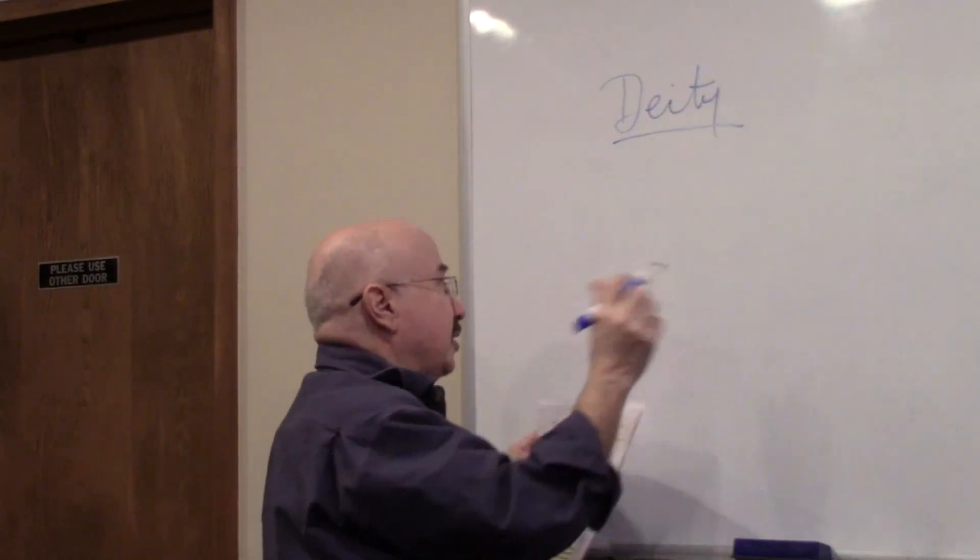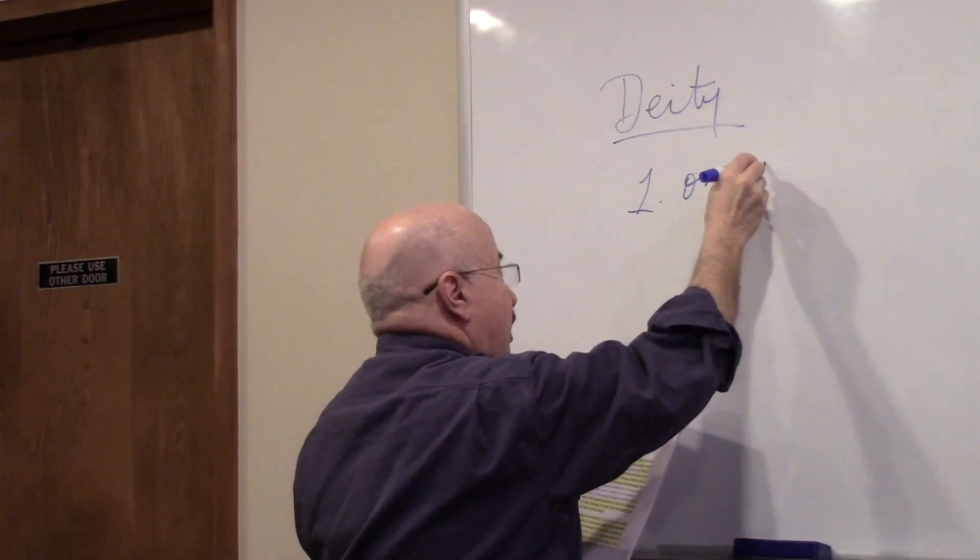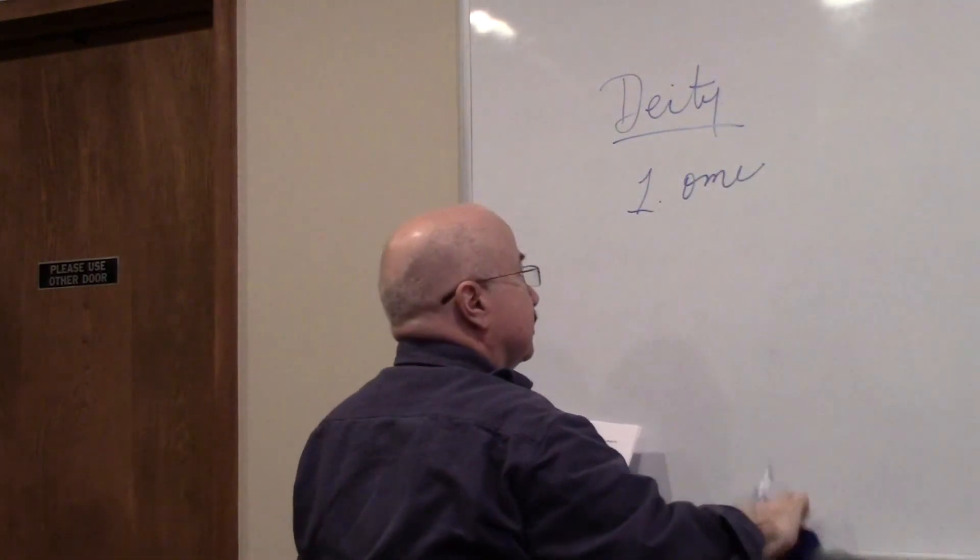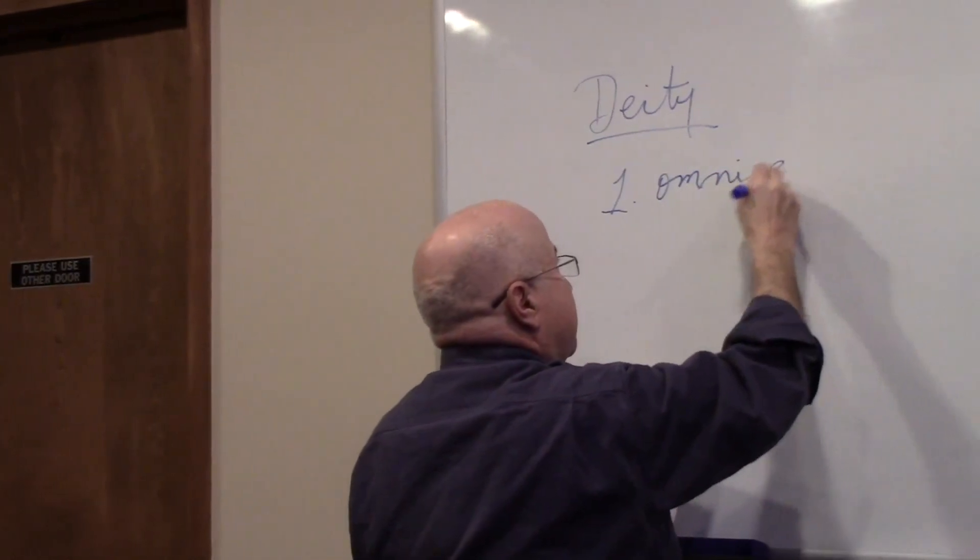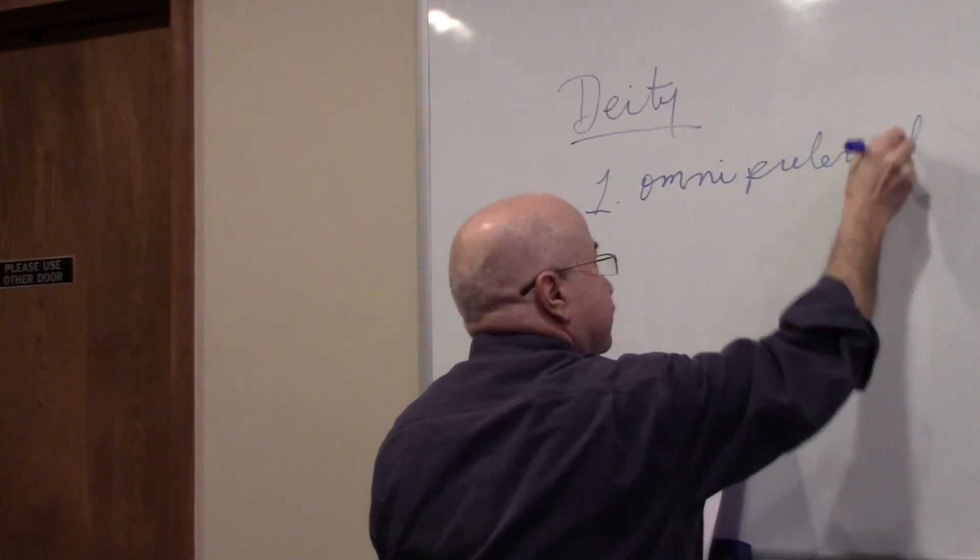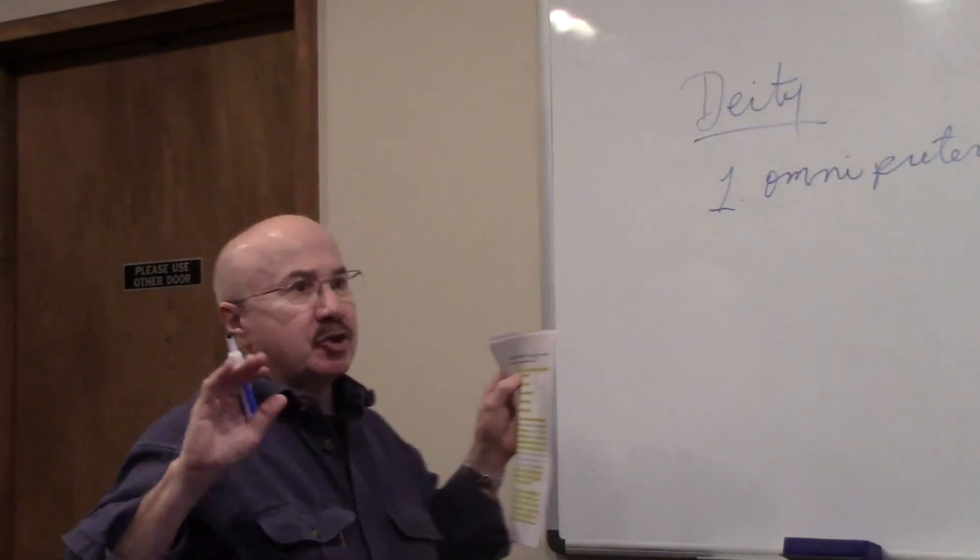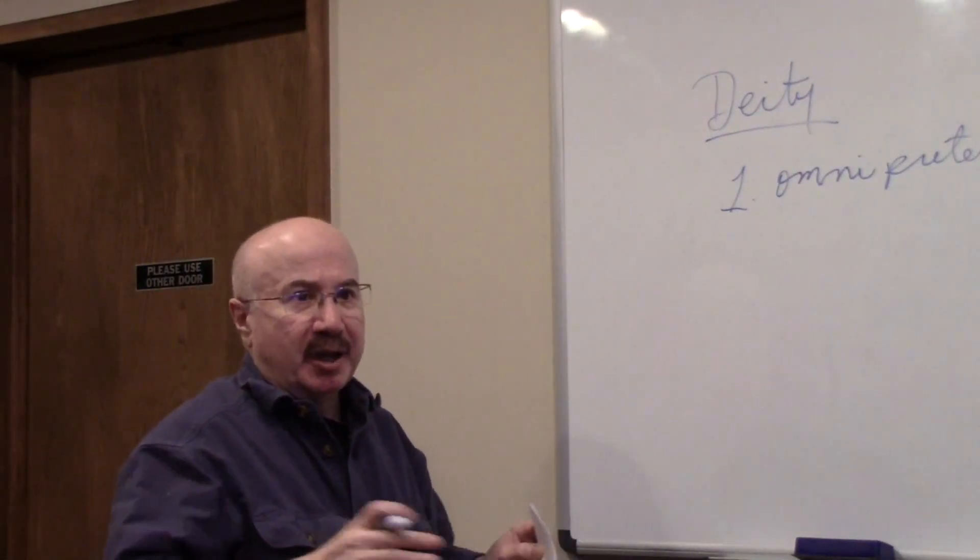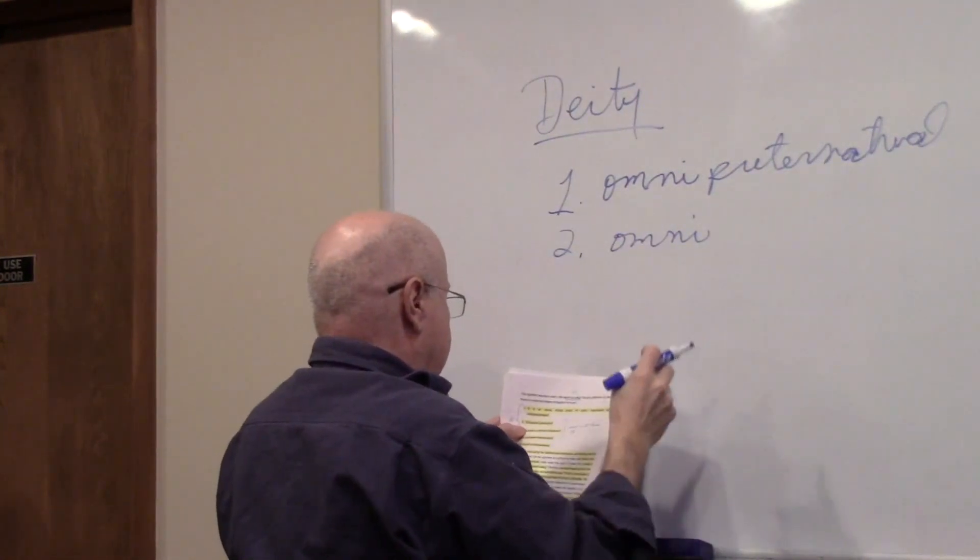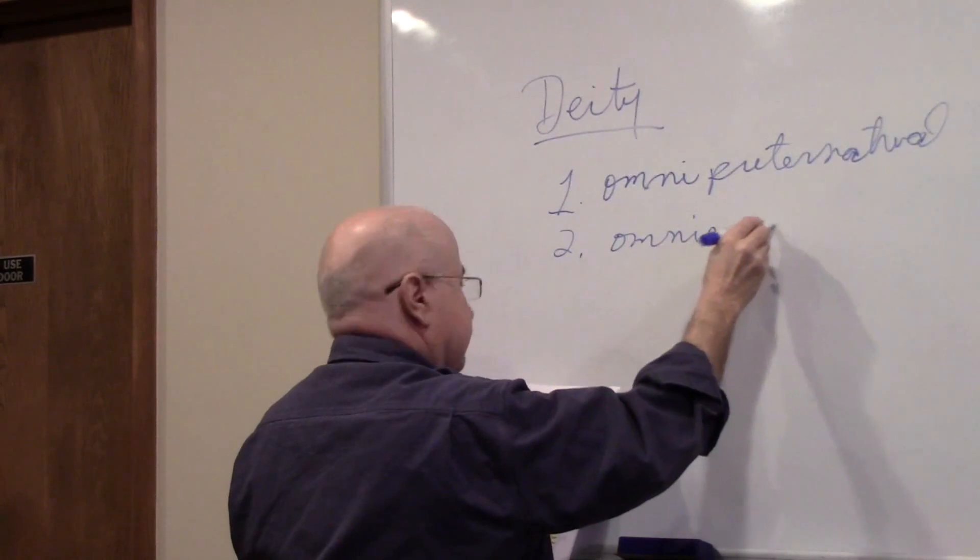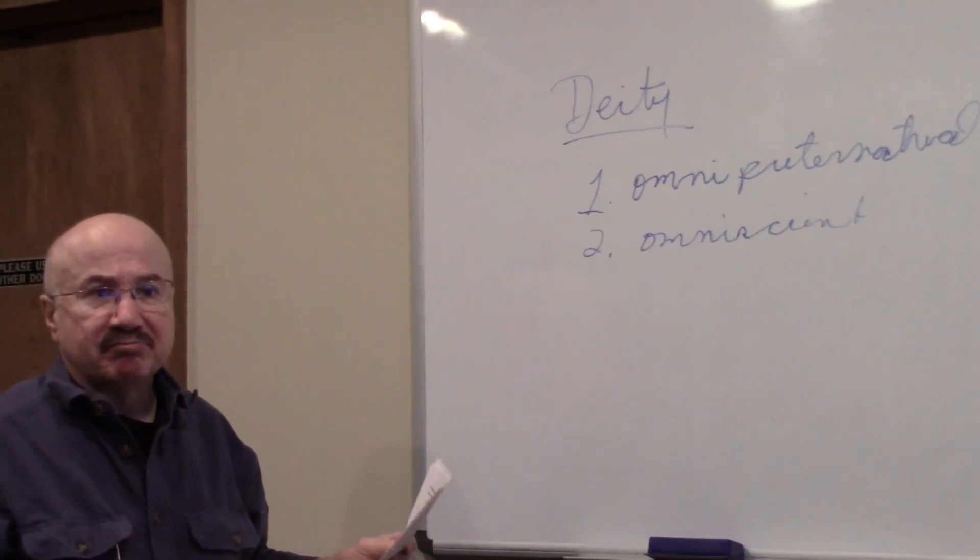The first is, and I call them the Omni words. The first is omnipreternatural. That's a big word. Omnipreternatural. What does that mean? It means all-powerful and supernatural, beyond the natural realm. The second Omni word is omniscient, and that means knows all. In effect, the deity knows all.